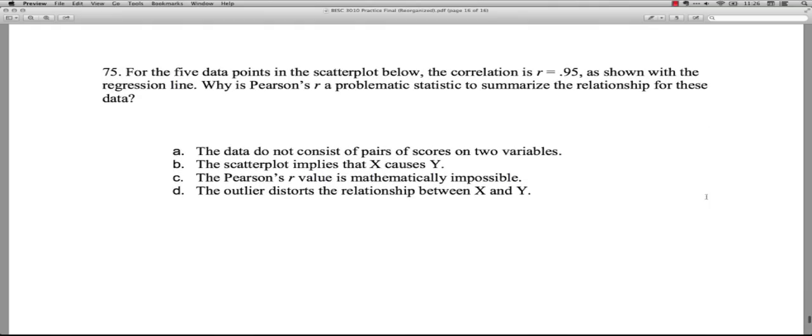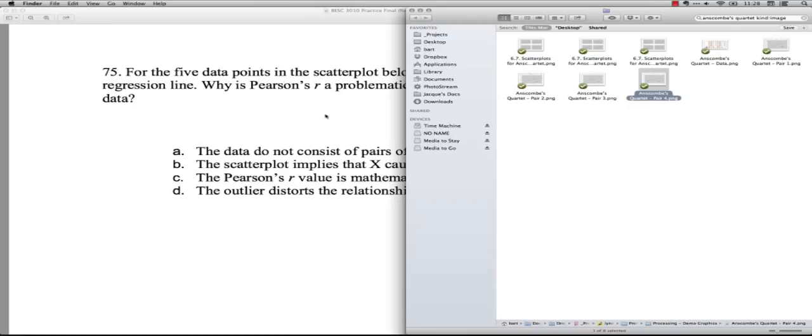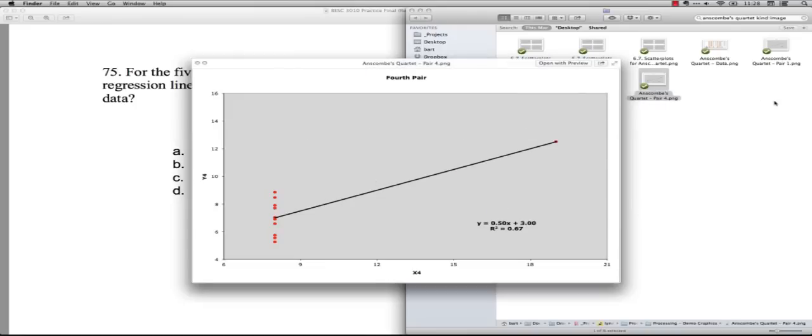And our very last one. For the five data points in the scatterplot below, we actually don't have it below. The correlation is R equals 0.95 as shown with the regression line. Why is Pearson's R a problematic statistic to summarize the relationship for these data? So it's not showing us the picture in this one, but I can show you what it looks like. I've got a similar statistic, one right here. It comes from what's called Anscombe's Quartet, which I show in our chapter on regression.